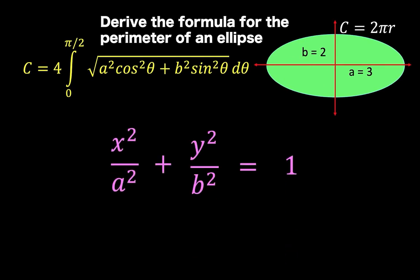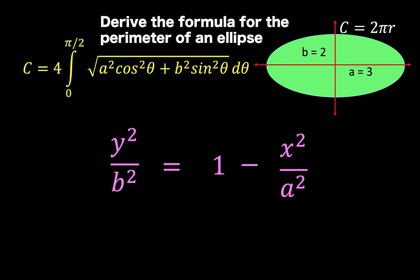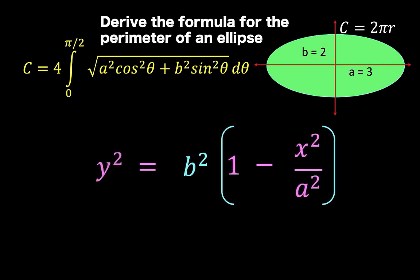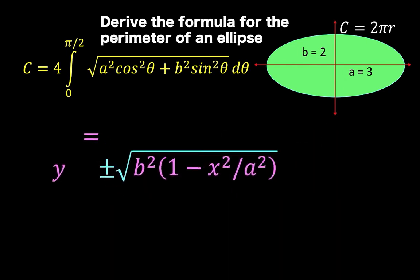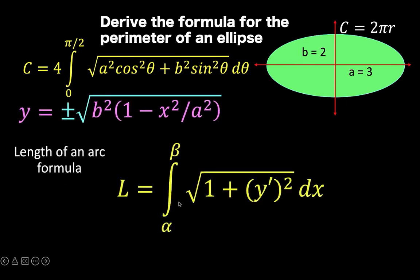Let's begin with the standard form of an ellipse: x squared over a squared plus y squared over b squared equals 1. Then let's solve this for y. We transfer x squared over a squared to the other side by subtracting it from both sides, then multiply both sides by b squared. We arrive at y squared equals b squared times the quantity 1 minus x squared over a squared. Taking the square root of both sides gives y equals plus or minus the square root of b squared times the quantity 1 minus x squared over a squared. Let's put this aside and use it later. Next, let's remember the formula for the length of an arc: l equals the definite integral from alpha to beta of the square root of 1 plus the derivative of y squared, dx. So we need to find y prime, the derivative of y.